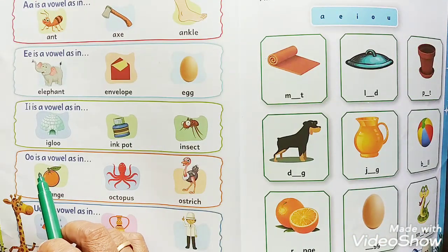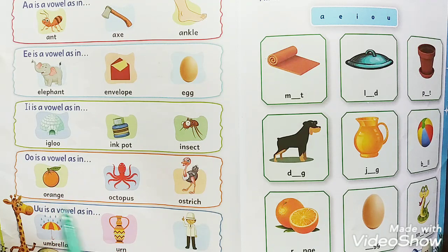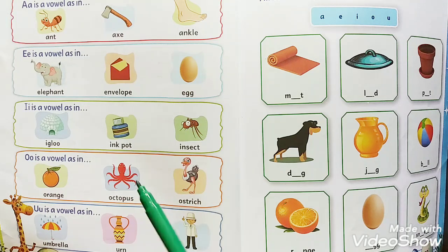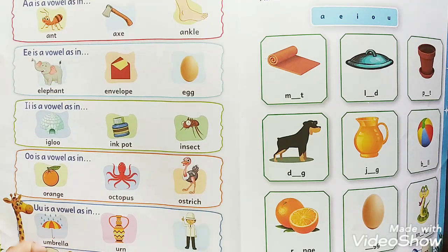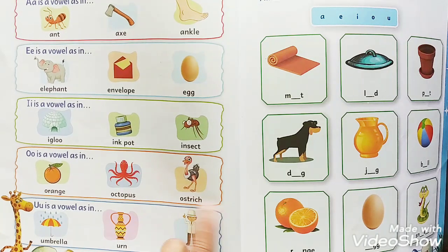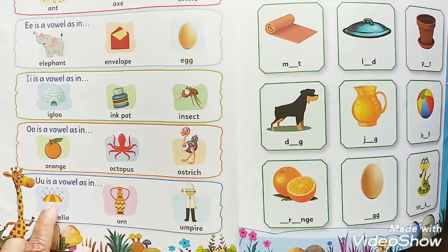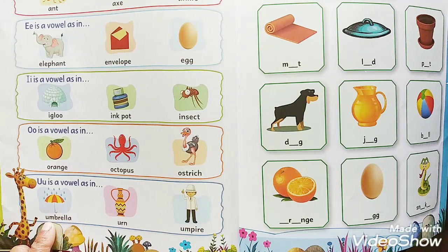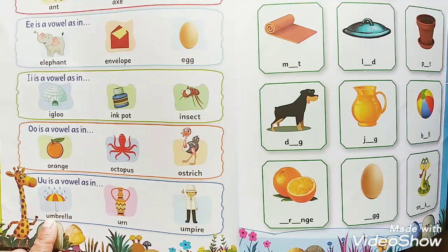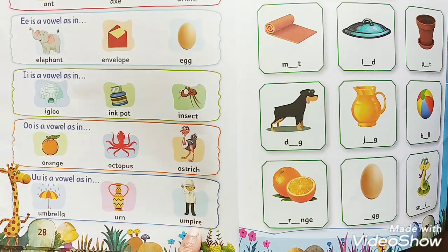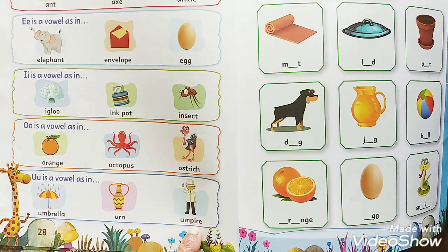O is a vowel, as in Orange, Octopus, Ostrich. And U is a vowel, as in Umbrella, Umpire.